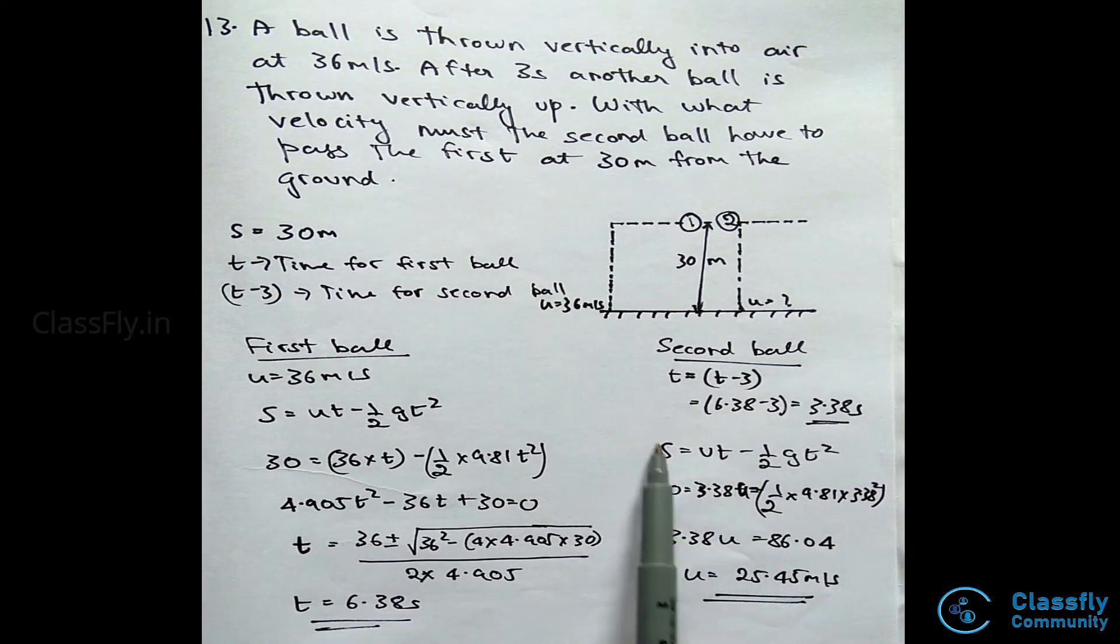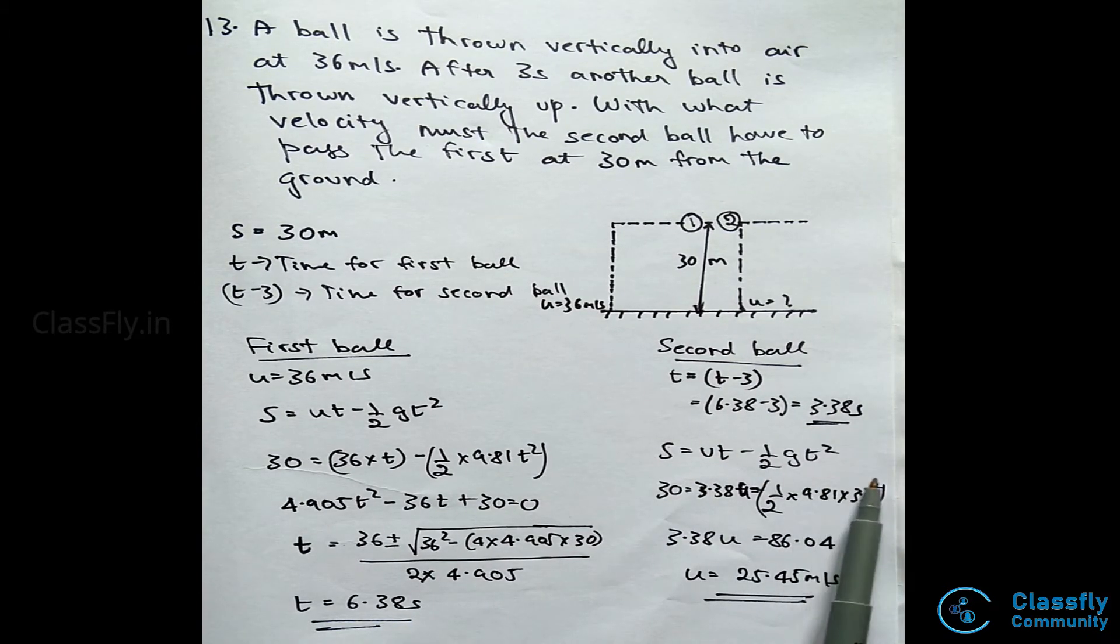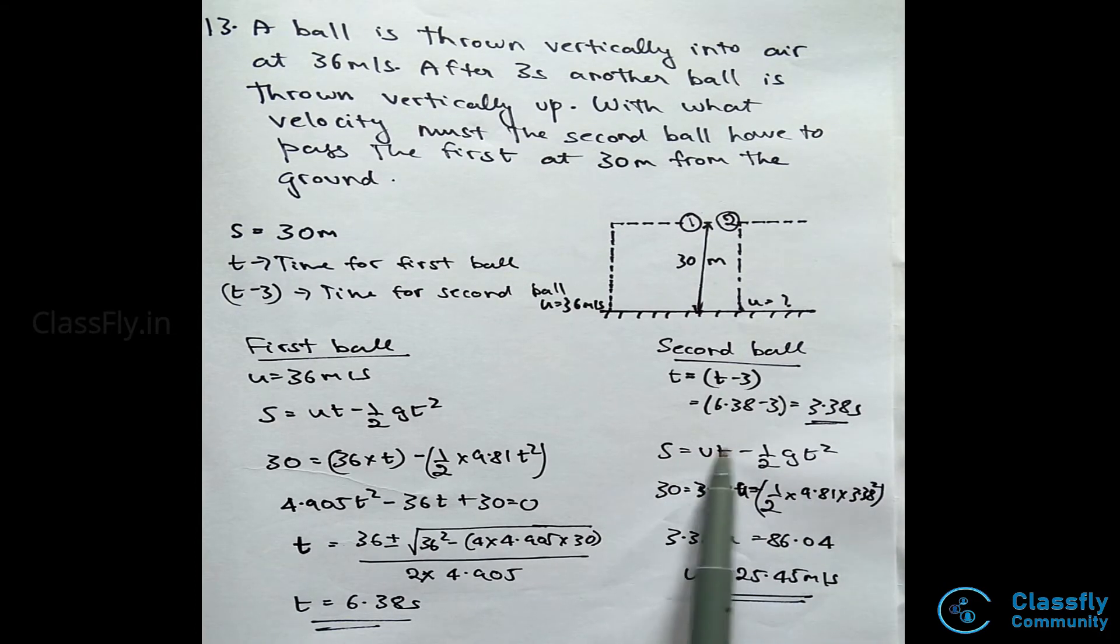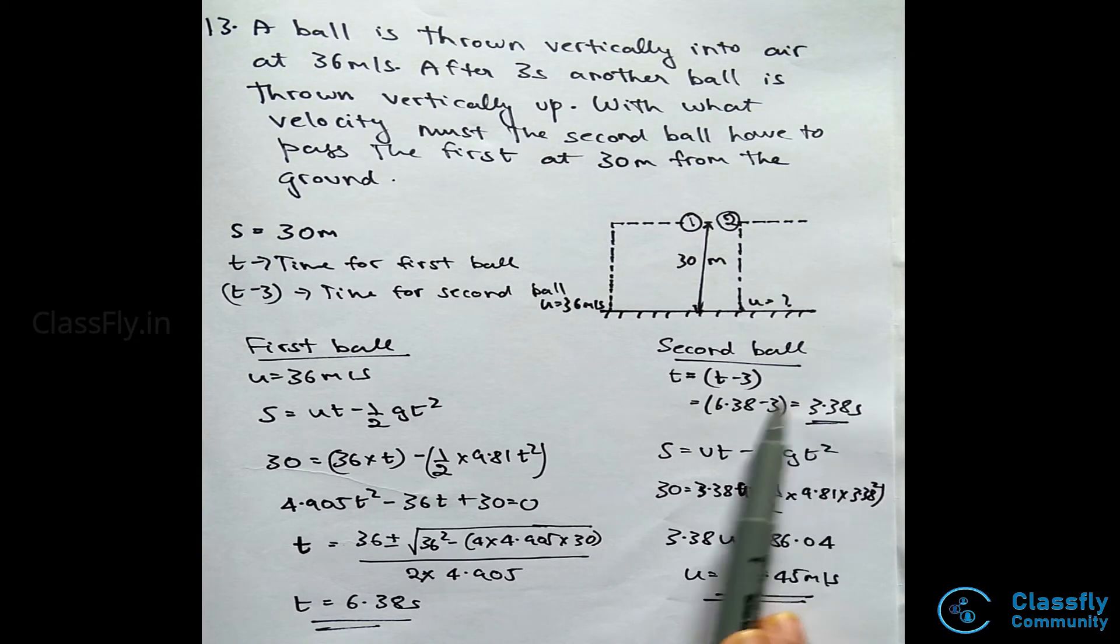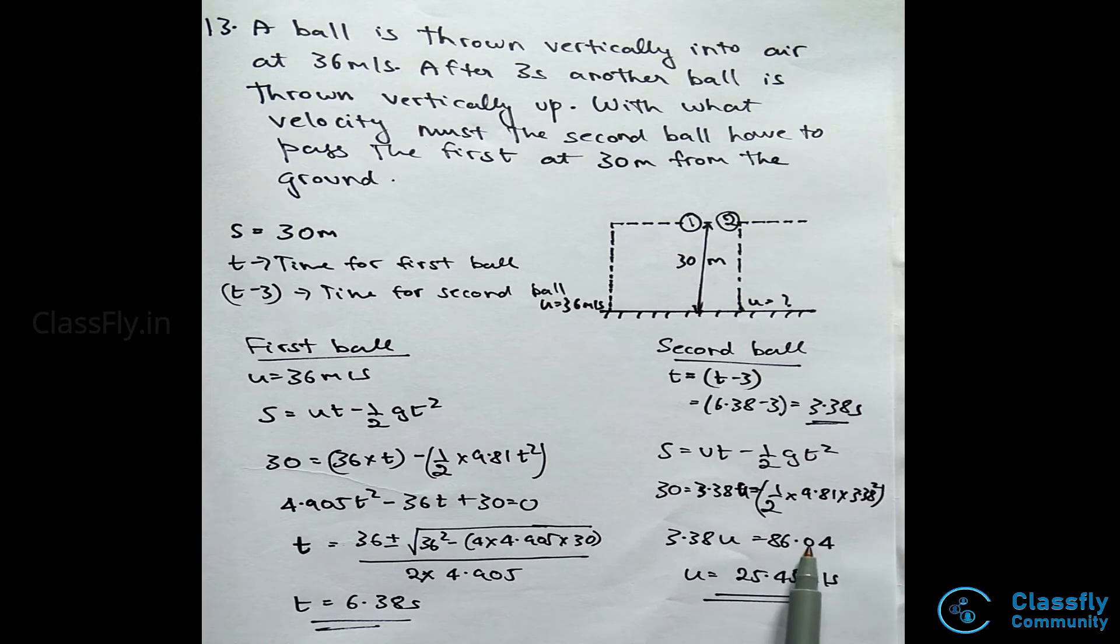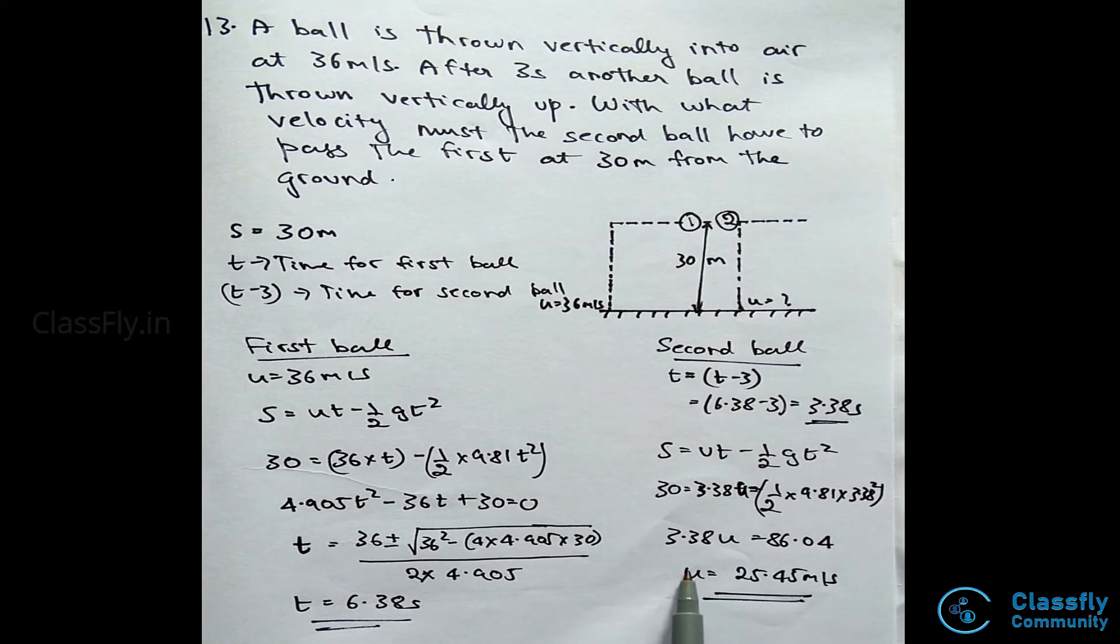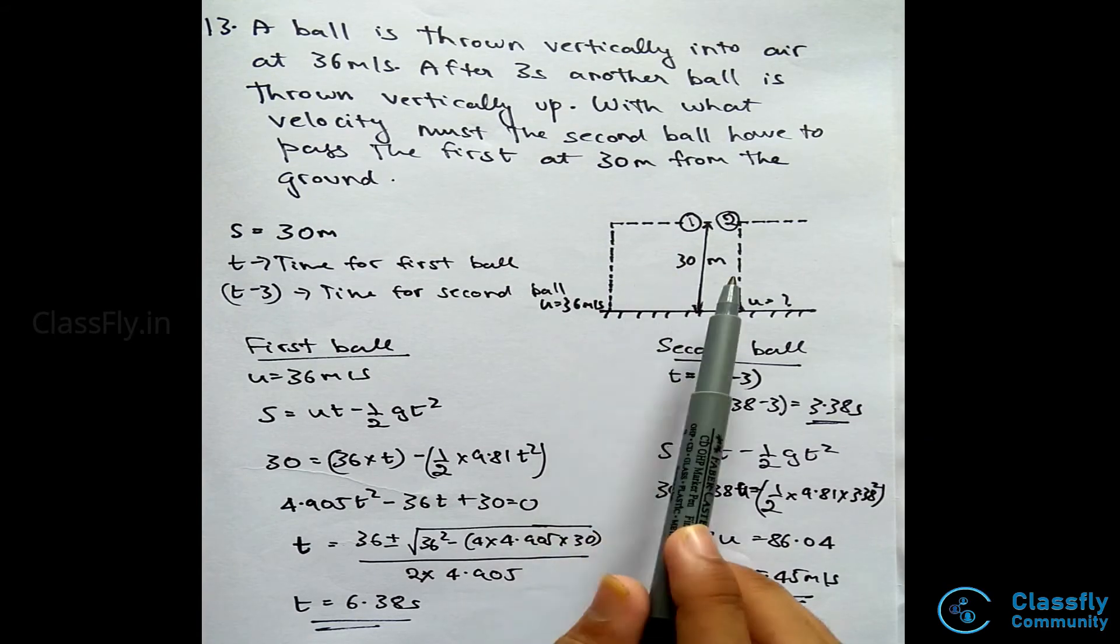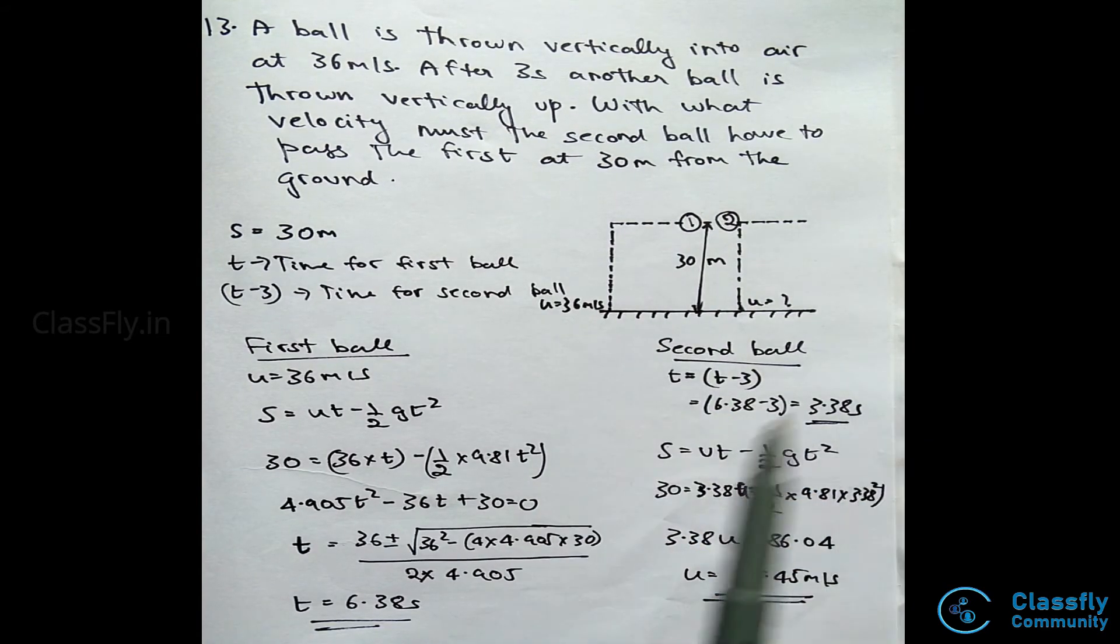Using the equations of motion similarly, we have s equals ut minus half g t square. That is 30 equals 3.38 into u minus half into 9.81 into 3.38 square. Hence, we get 3.38 u to be 86.04, and the value of u to be 25.45 meters per second. Hence, the second ball should be thrown with this velocity in order for it to pass the first ball at a distance of 30 meters from the point at which is thrown.